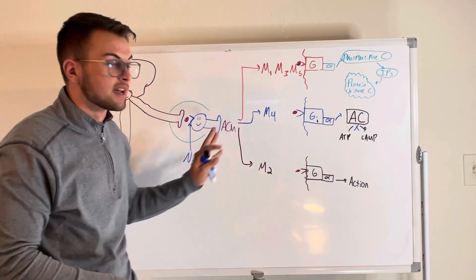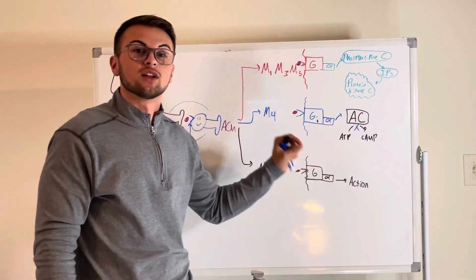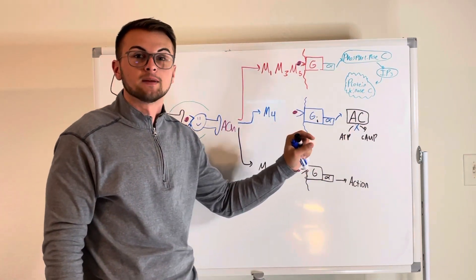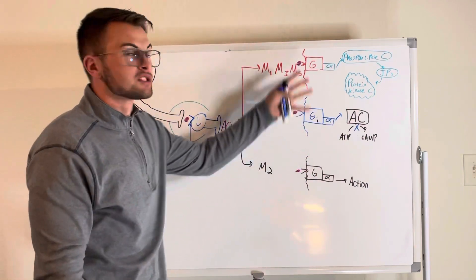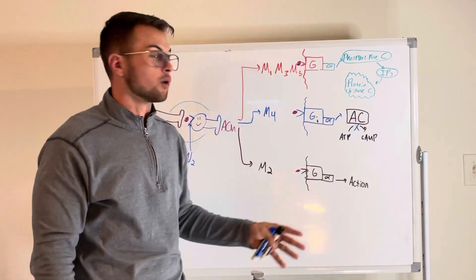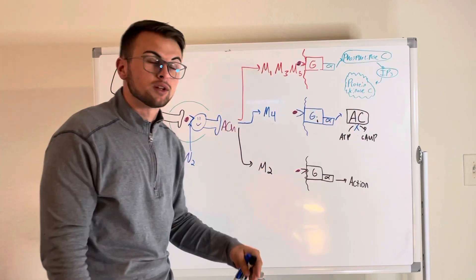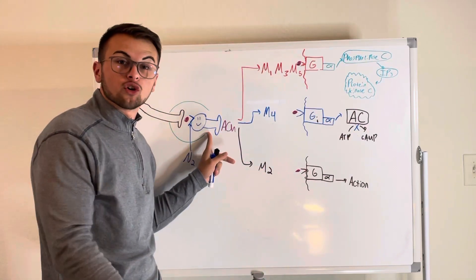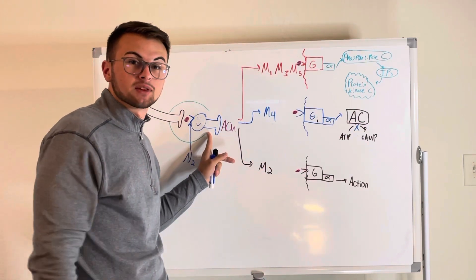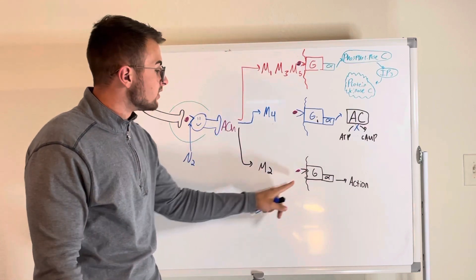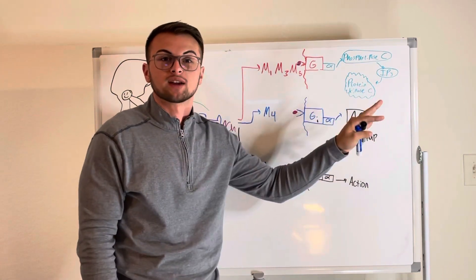So now we're going to take it to muscarinic receptors that are also activated by acetylcholine but they are found in different cells throughout the body. They are activated by acetylcholine from our post-ganglionic parasympathetic neuron, but these receptors will actually cause a direct action in the cell.